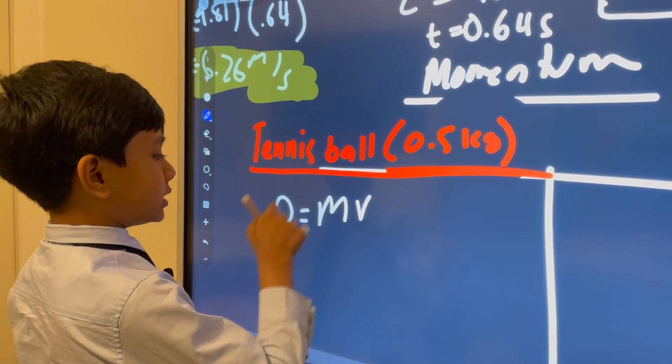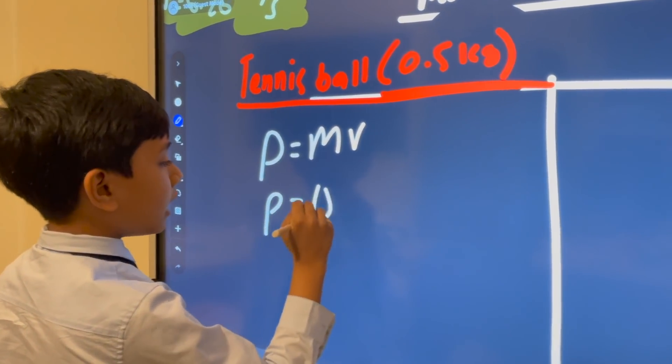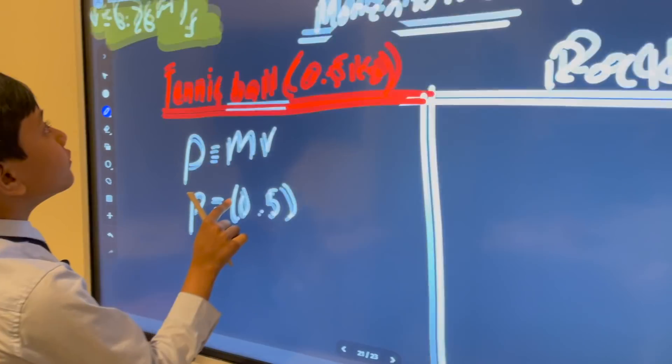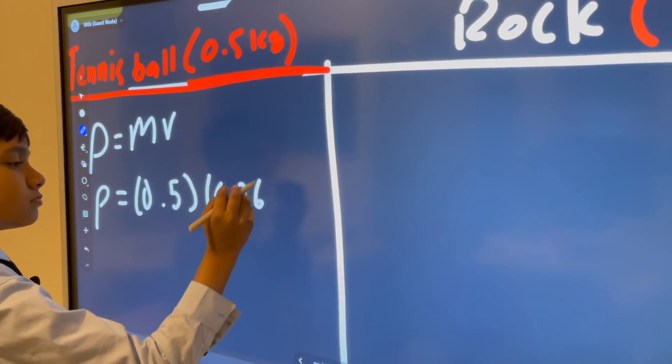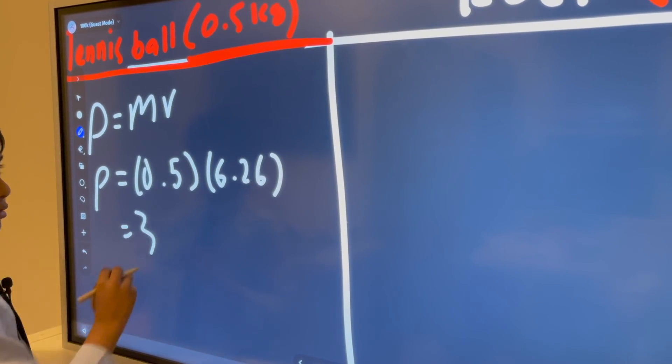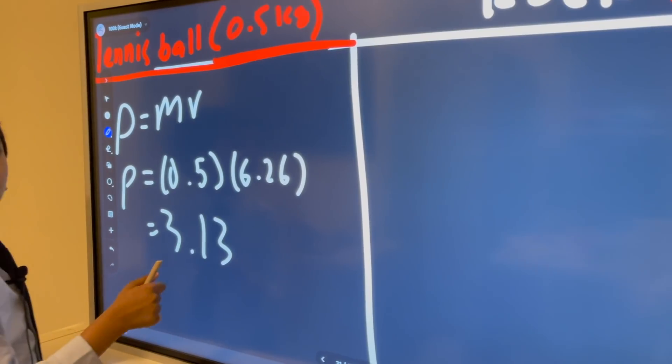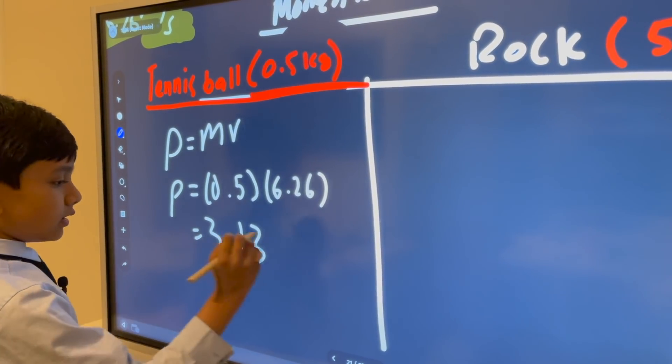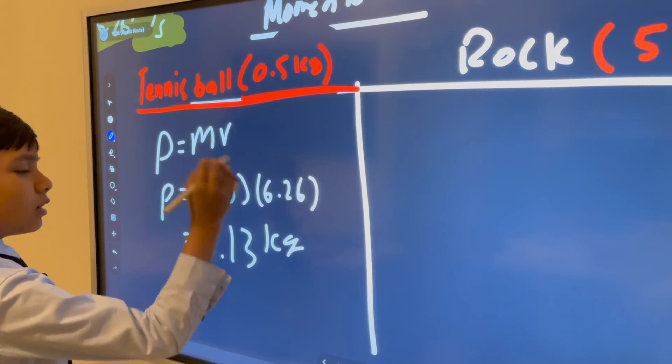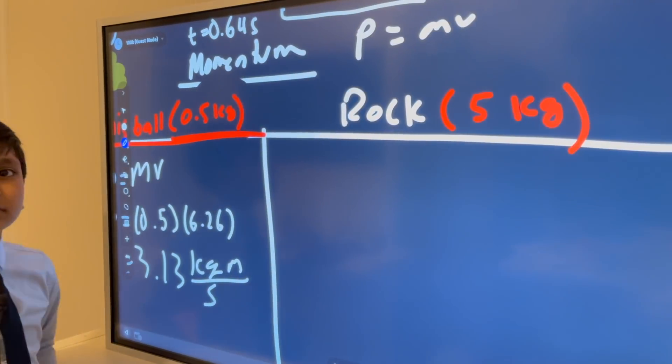P equals M V. And you know that M is zero point five, and that V is six point two six, which is, well, let's see, three point five two six one three. So that's three point one three kilogram meters per second.